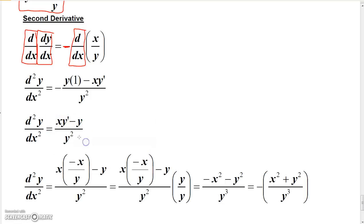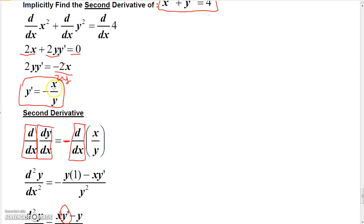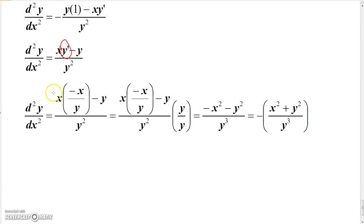But here's the clever little trick. I know what y prime is, don't I? Now, if you go back up here, remember y prime is minus x over y. So I can go in here and replace y prime with minus x over y. So now I have x times minus x over y minus y.